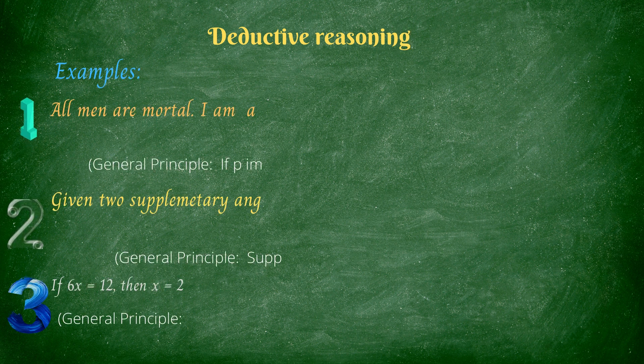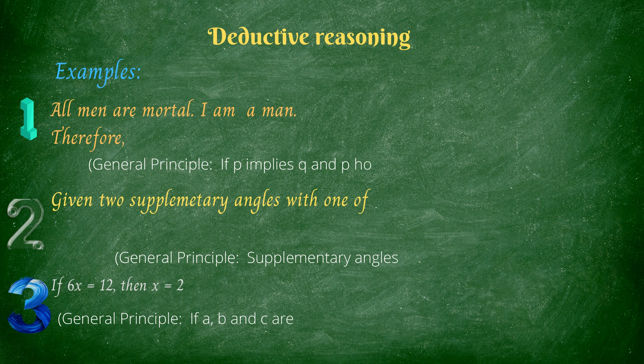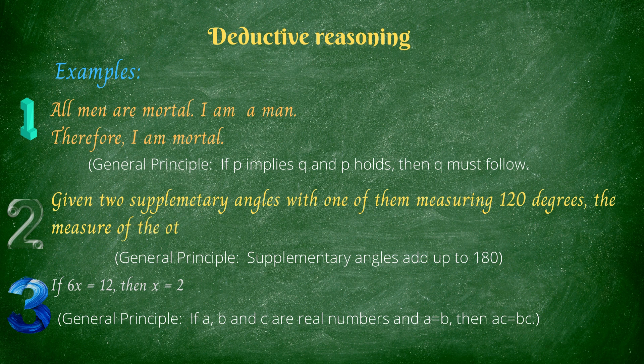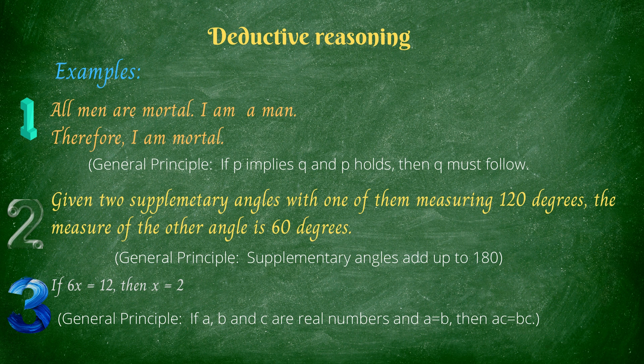Let's take a look at this example. All men are mortal. I am a man. Therefore, I am mortal. So the general principle here is, if P implies Q and P holds, then Q must follow.